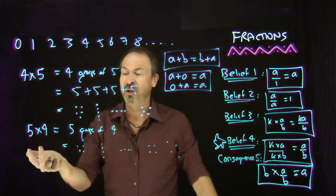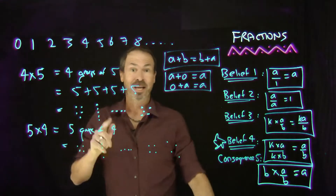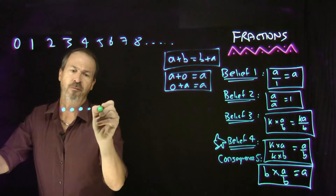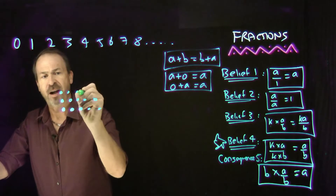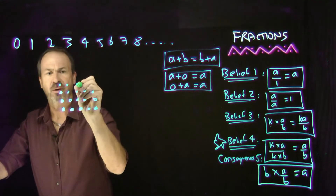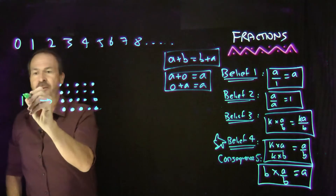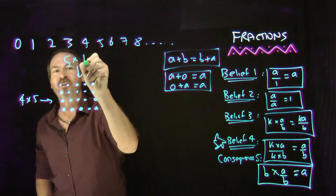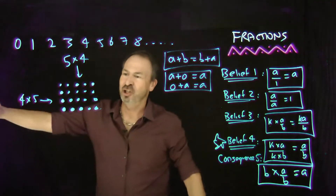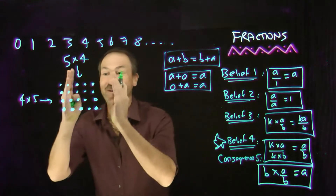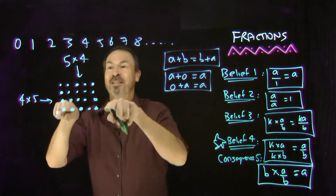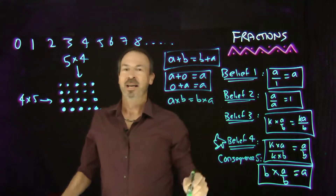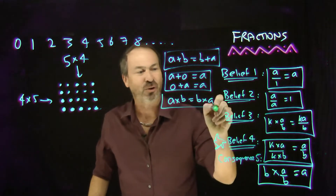The key to seeing why we can switch the order of multiplications is to be more systematic. Let me draw 4 groups of 5 again, but stacked: one group of 5, second group of 5, third group of 5, fourth group of 5. Looking at it as rows, I see 4 groups of 5. But if I change perspective and look this way, I see 5 columns — 5 groups of 4. It's the same picture, the same dots, just a change of viewpoint. It must be the same count of dots. I don't even have to say 20. So: multiplication is commutative, a times b equals b times a.